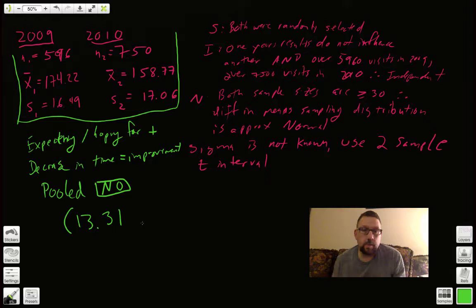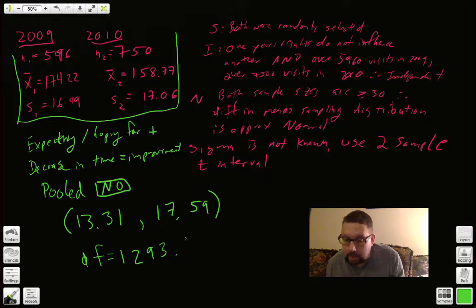13.31 comma 17.59. Other information it gives me. It gives me a DF. Check this out. This is crazy. 1,293.97. There is a ginormous degrees of freedom formula for doing two sample t tests that we're not going to learn. So it's okay that you've got this ginormous DF. Don't worry.